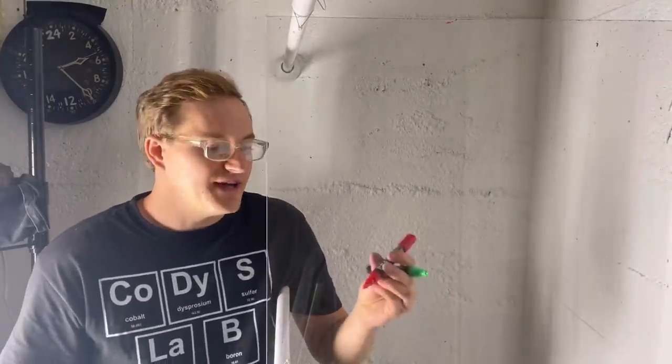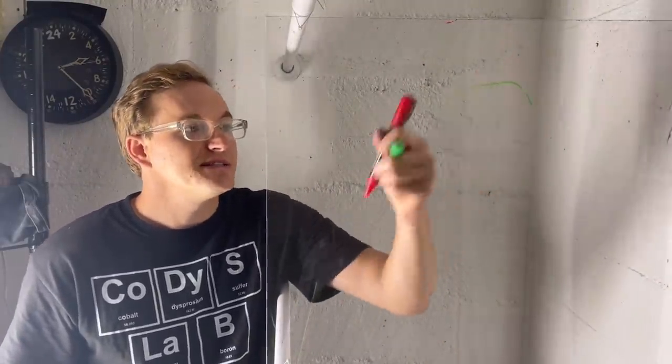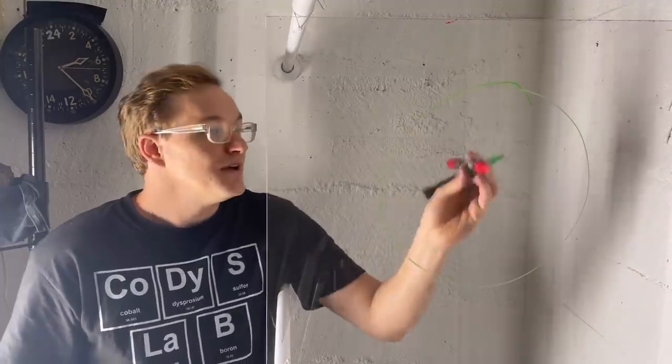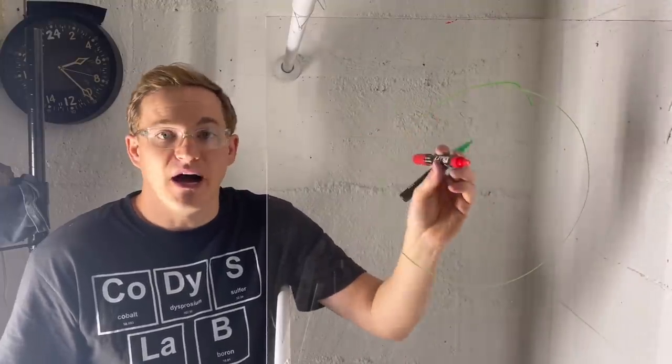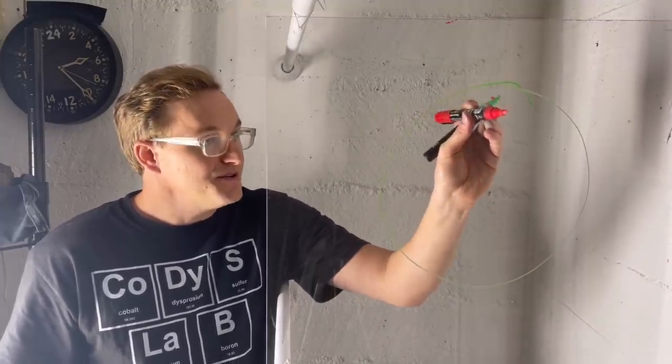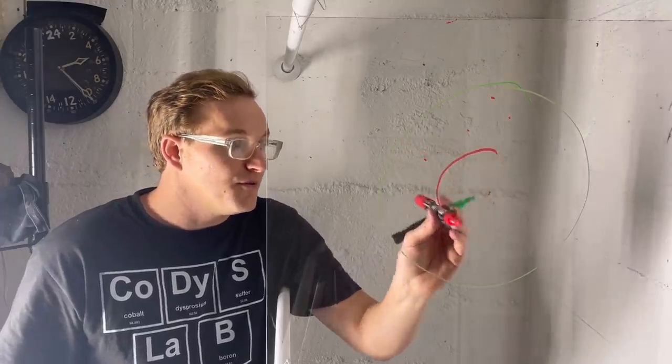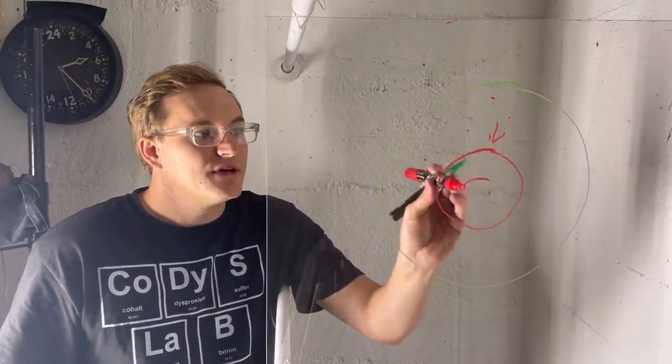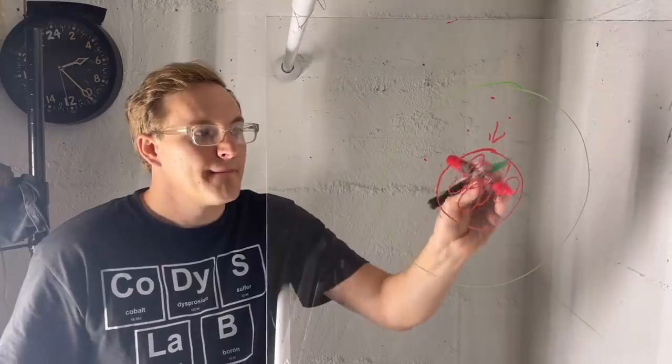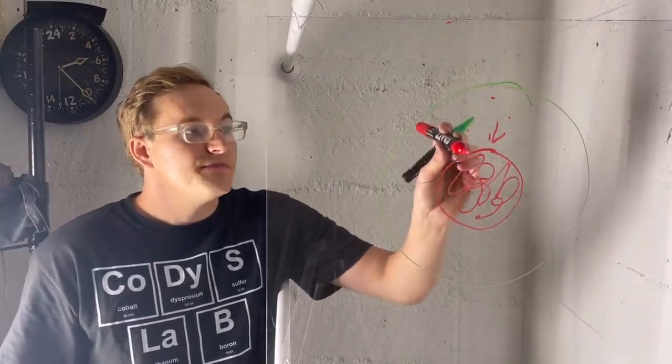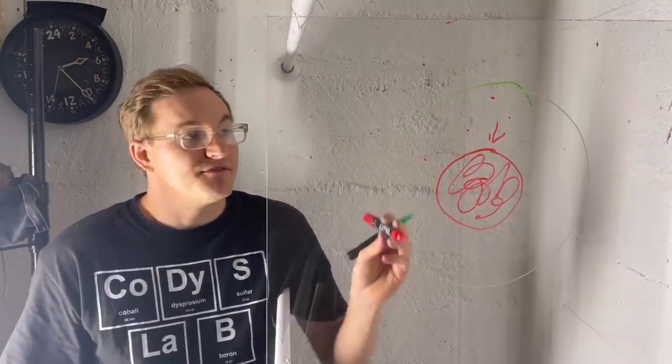But the biggest reason that those trace elements are not available on the earth's surface is because they're not on the earth's surface. When the earth formed it was hot, it was molten, and so those elements—the iron, the copper, the cobalt, the chrome—they sunk down and formed the earth's core.